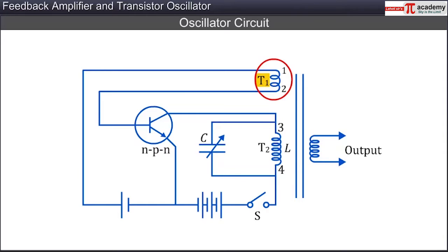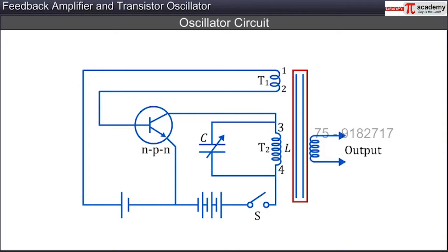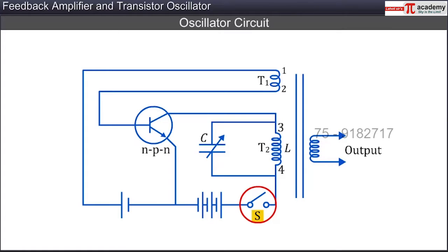Coils T1 and T2 are wound on the same core so that they can influence current in each other through inductance. The output circuit also contains a switch S.